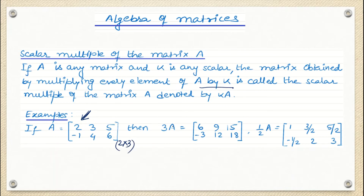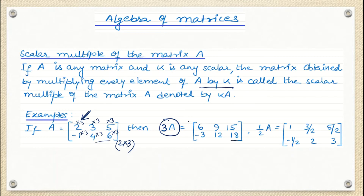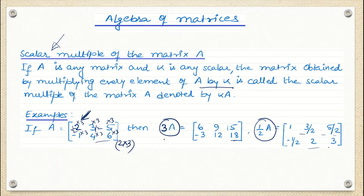If I have to find 3A, I am going to multiply 3 to each and every element of the matrix. So the answer is 6, then 9, 15, minus 3, 12, and then 18. For half of A, it is the same thing — two divided by two, three by two, five by two, and so on. This way we find the scalar multiple of a matrix. We will be seeing how to find the rank of the matrix in coming classes, and to find the rank, we have to deal with scalar multiples of matrices.